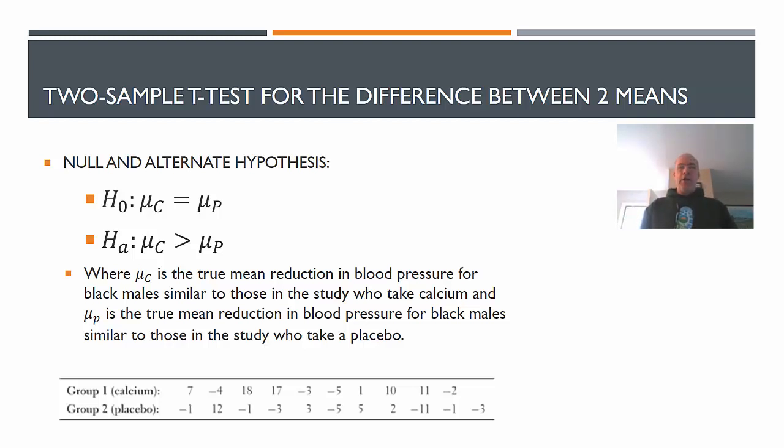Here it's very important to define what we're talking about. Mu sub c is the true mean reduction in blood pressure for black males similar to those in the study. We want to extend to the population of men who potentially would take calcium. And mu sub p is the true mean reduction for black males similar to those in the study who take placebo. So we're extending to the population here in our null and alternate hypothesis. And it is important that you define your variables here.